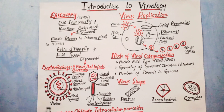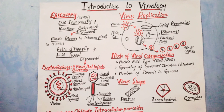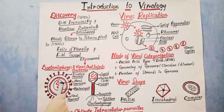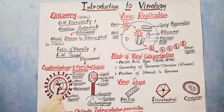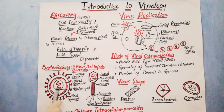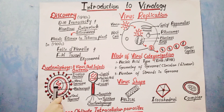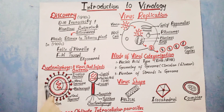Here we have the structure of a virion. A virion is the complete infectious form of a virus when the virus is active outside the host cell. The virion is comprised of a nucleic acid surrounded by a protein coat called the capsid. Together, the capsid and the genetic material are called the nucleocapsid. This capsid protects the nucleic acid from chemical and enzymatic reactions.